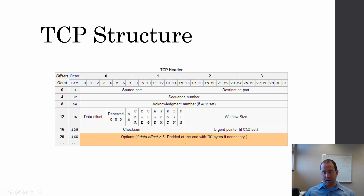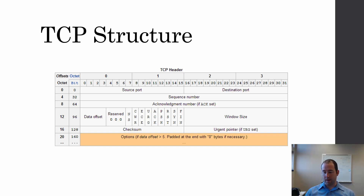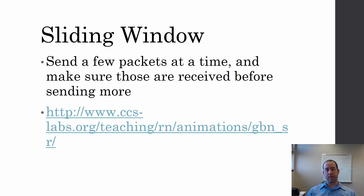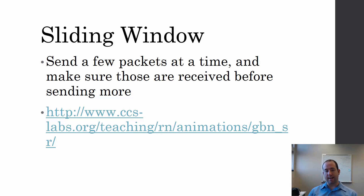One thing we haven't talked about yet is window size. This window size is TCP's way of doing flow control, and it operates using something called a sliding window. What that means is that the sender transmits a few segments or packets at a time, and then before sending any more, it waits for acknowledgements on those packets.